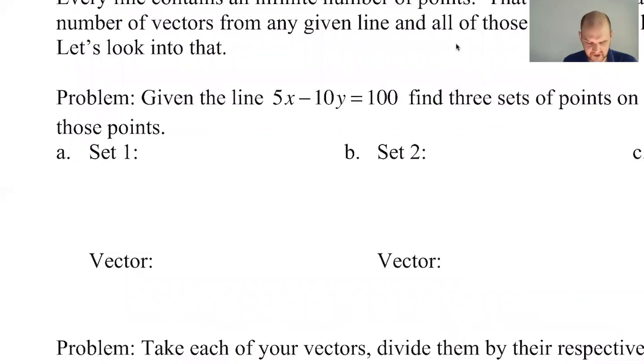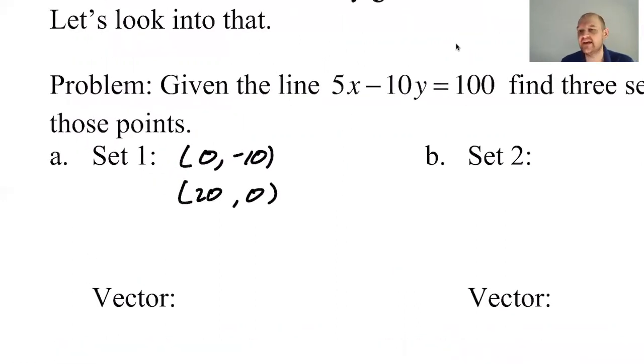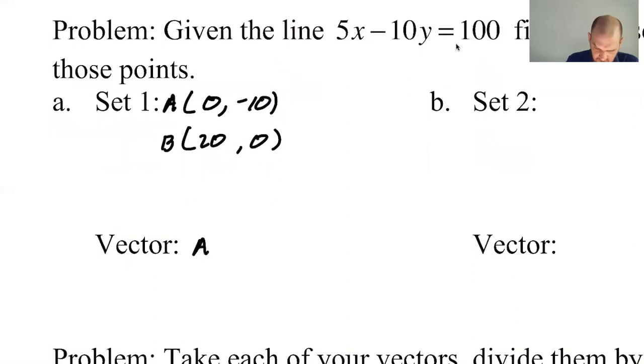We could use a calculator and spit these out really quickly, but let's see. What are the obvious choices? First, I'm going to let x be zero, and if x is zero, then y has to be negative 10. Then I'm going to let y be zero, and if y is zero, then x must be 20. I'm going to do the vector from here to here. I'll call this point a and this point b, and then make the vector AB. That's going to be 20 minus zero is 20, zero minus negative 10 is 10.